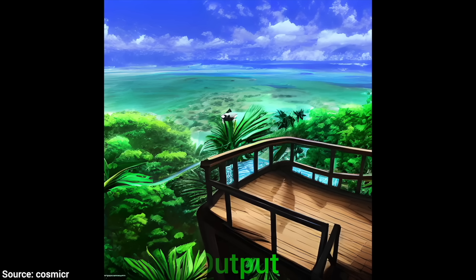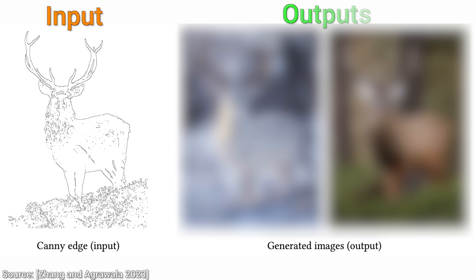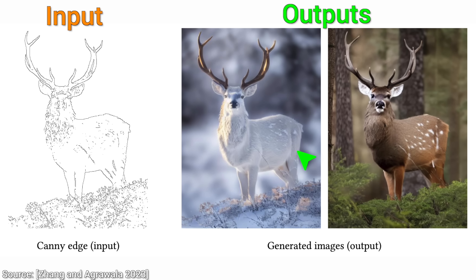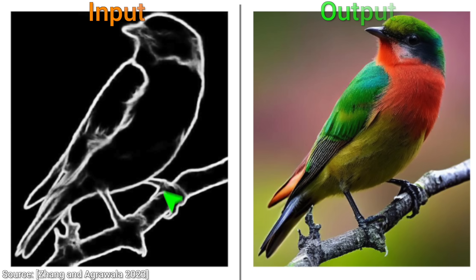For instance, we can provide just the edges of an input image. This can be a rough sketch, or edges extracted from a real photo, and we get a beautiful image with exactly that creature and framing. We can also provide a boundary map, and ControlNet is able to follow that too.